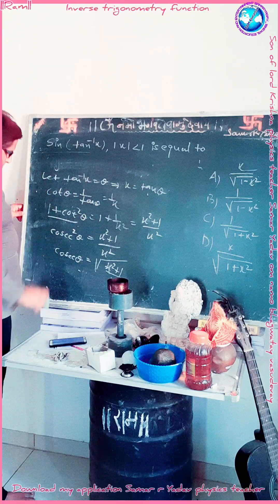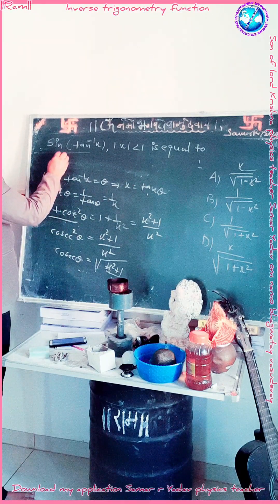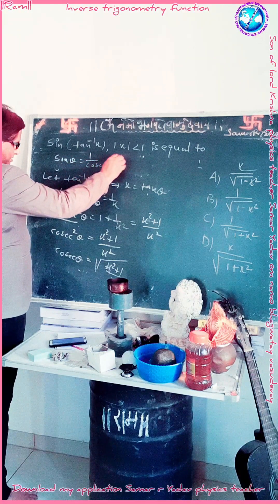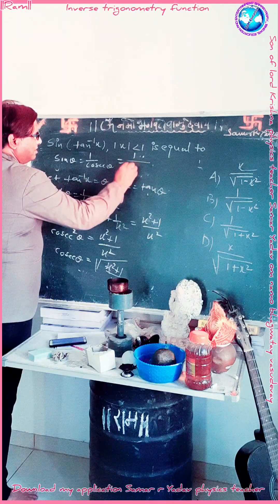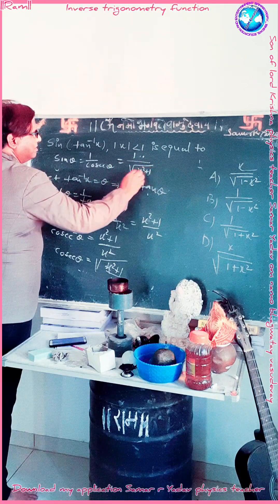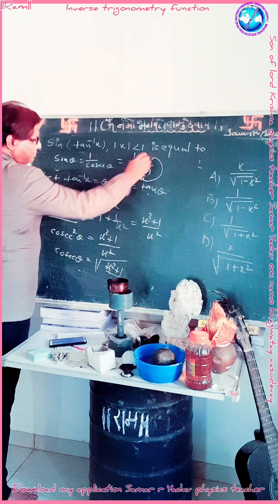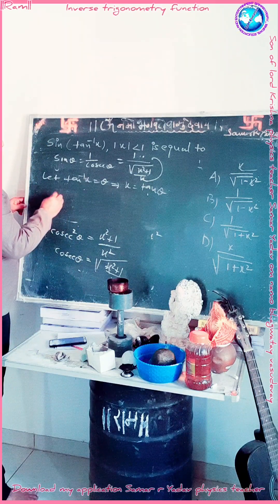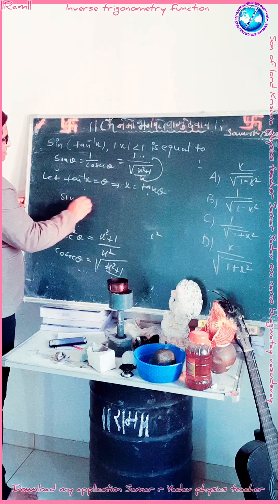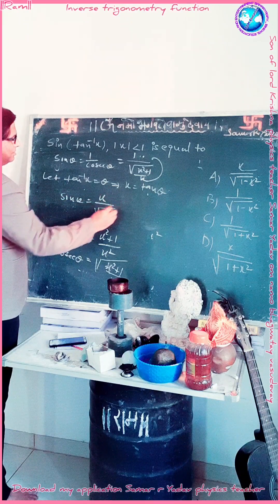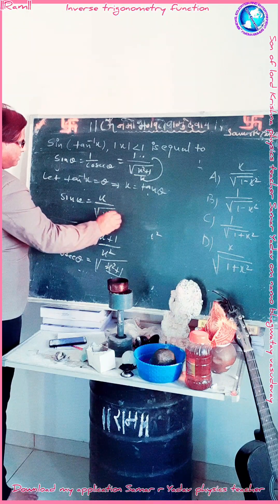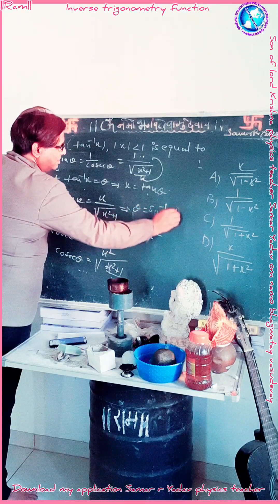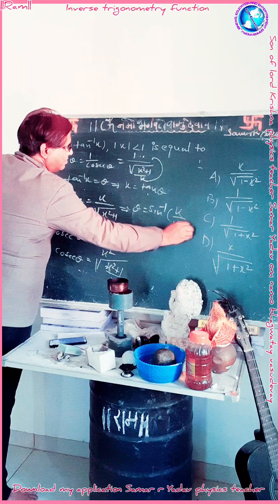Simplifying further: cosecθ = √(x² + 1) / x, so sinθ = 1/cosecθ = x / √(x² + 1). This implies θ = sin⁻¹(x / √(x² + 1)).